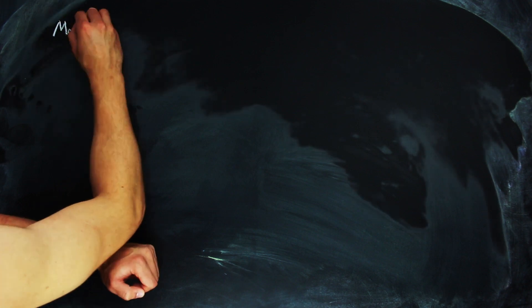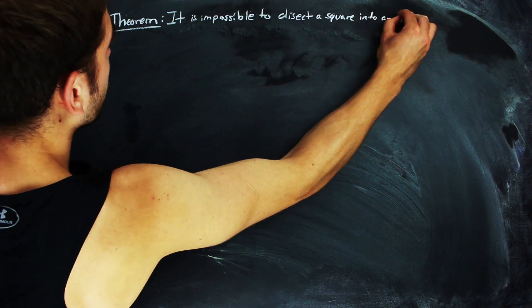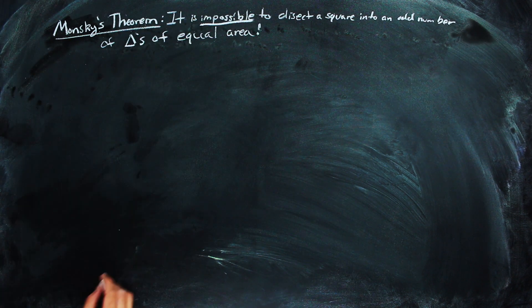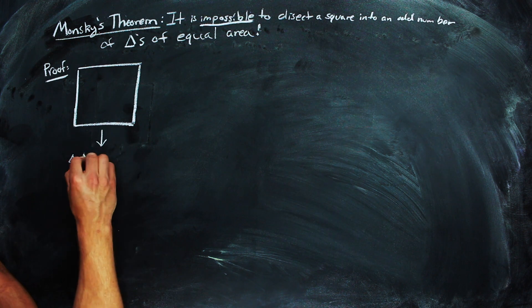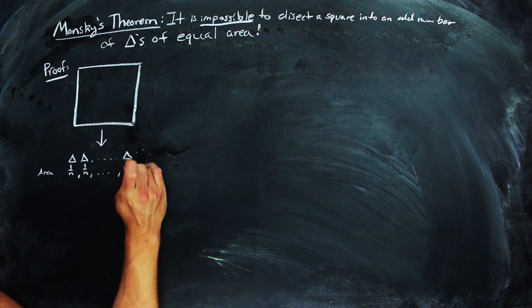Alrighty, so we're ready to prove Monsky's theorem, which states that it is impossible to dissect a square into an odd number of triangles of equal area. It sounds counterintuitive and hard to prove, but Sperner's Lemma and the two-adic norm are going to be really helpful, and hopefully we'll clear this up.